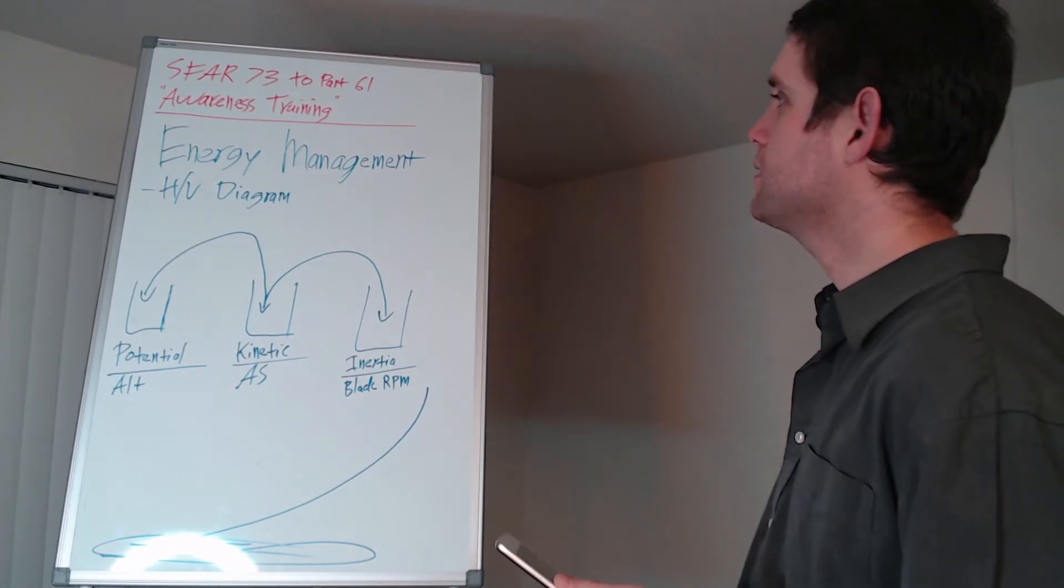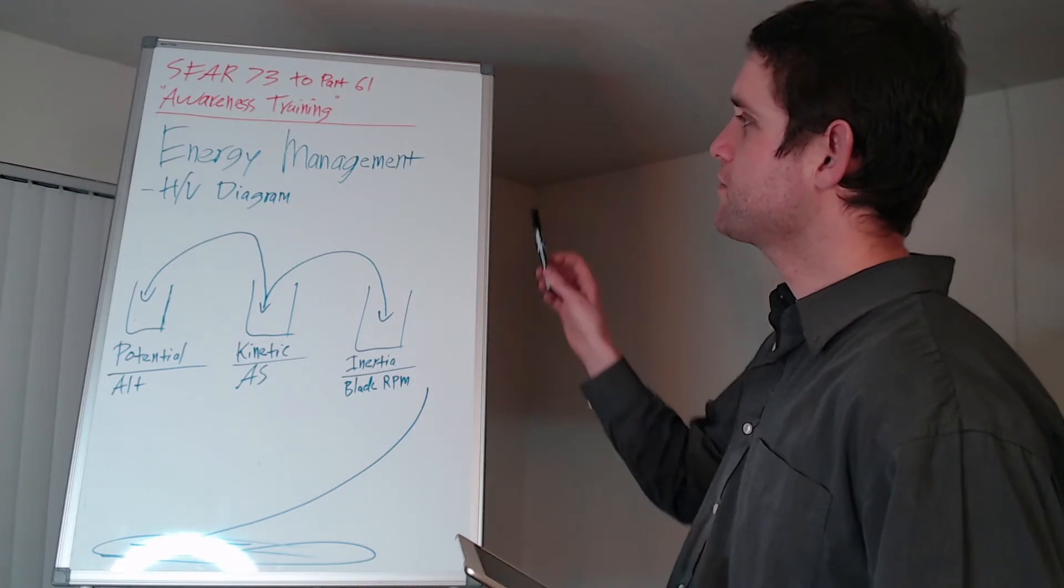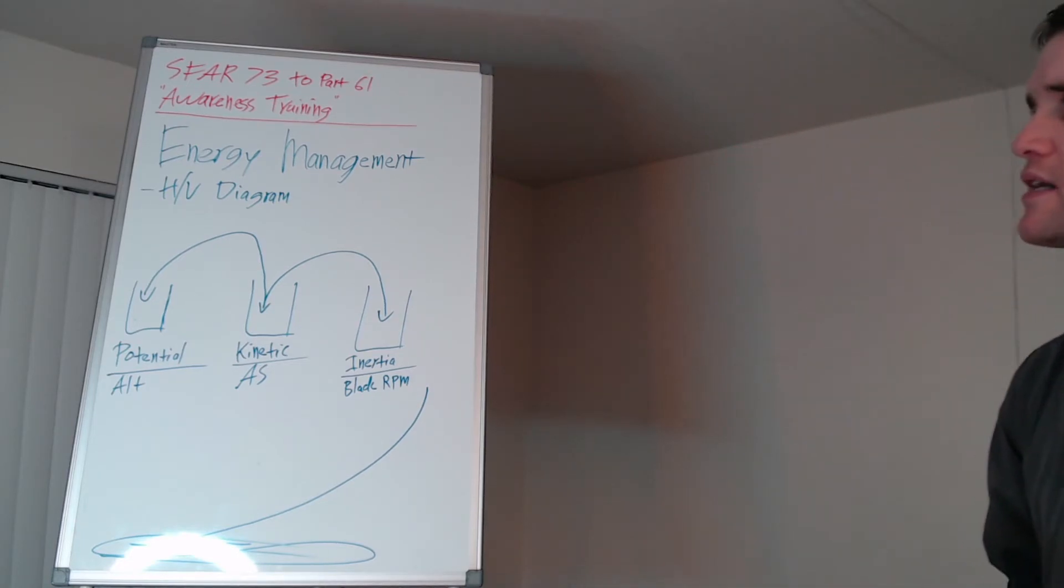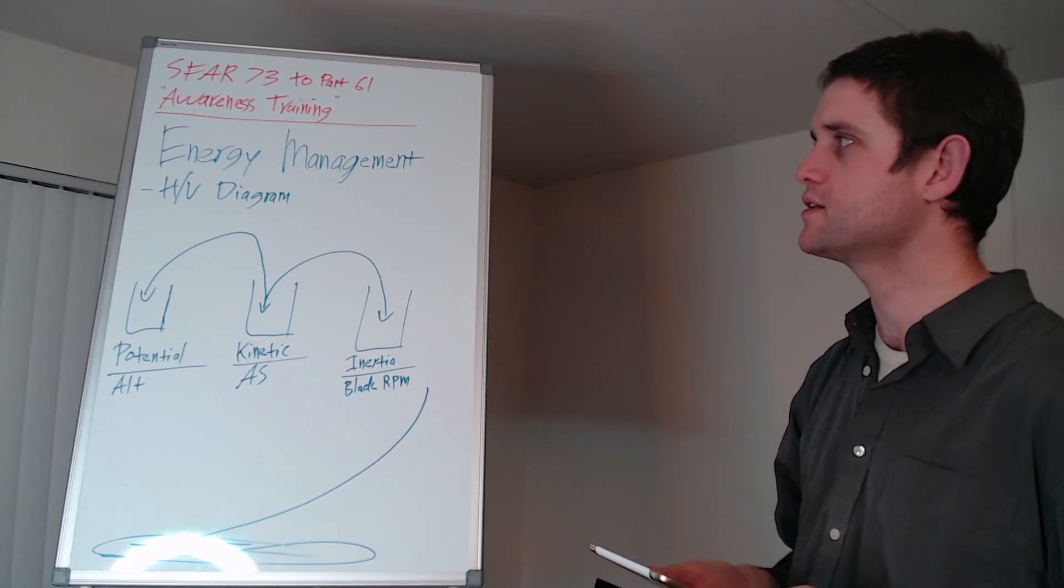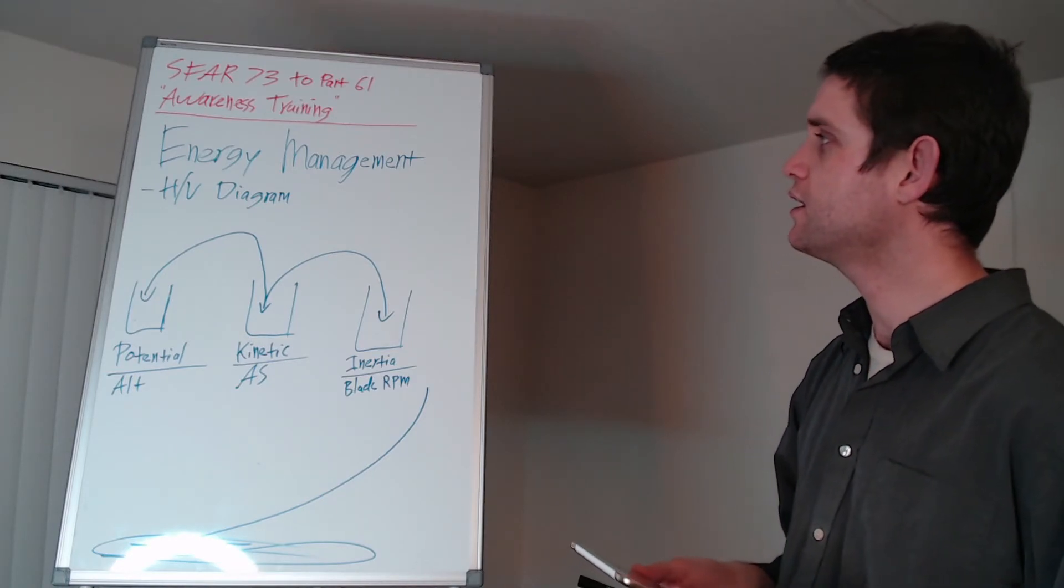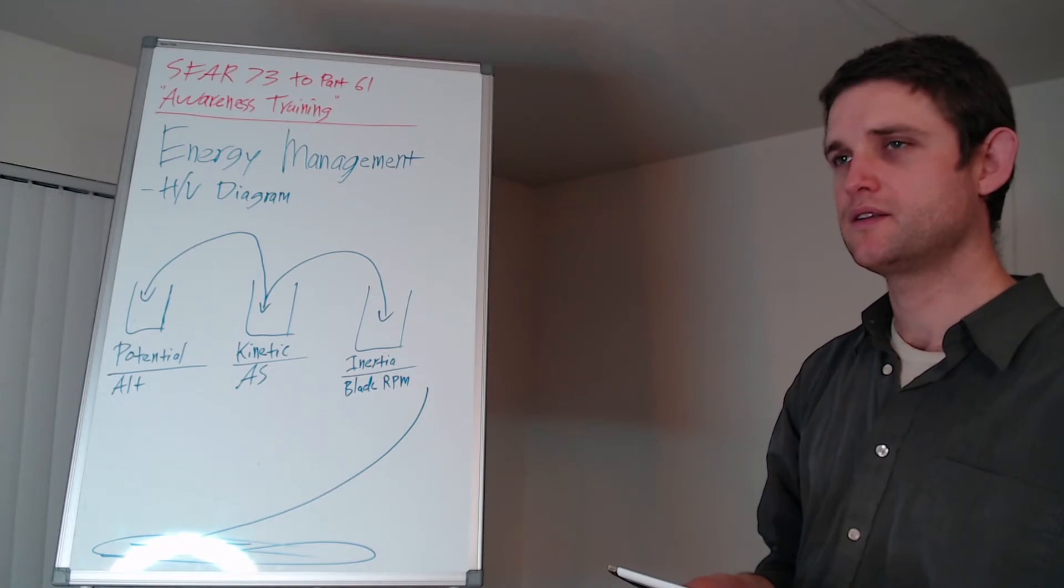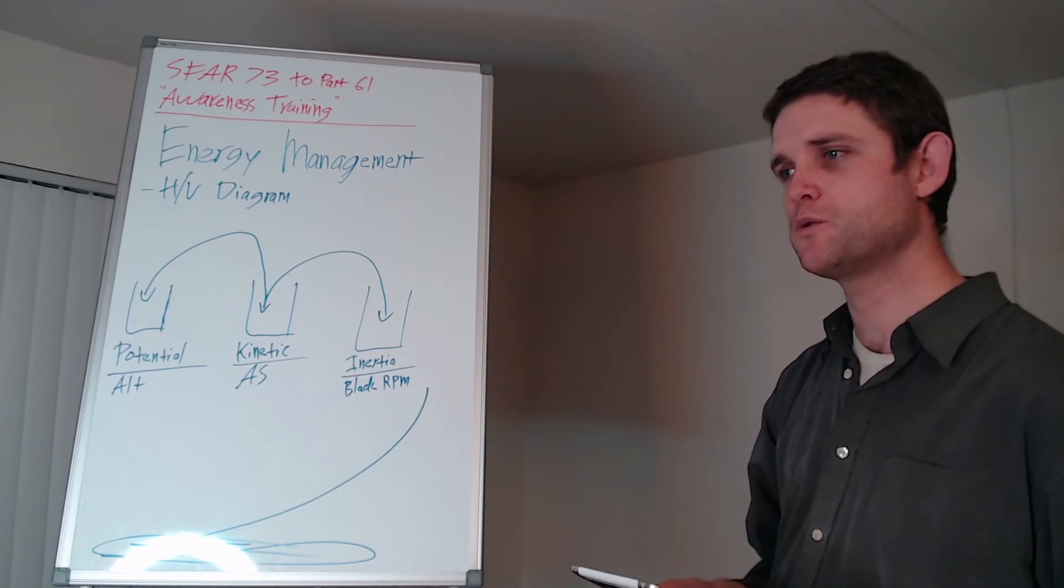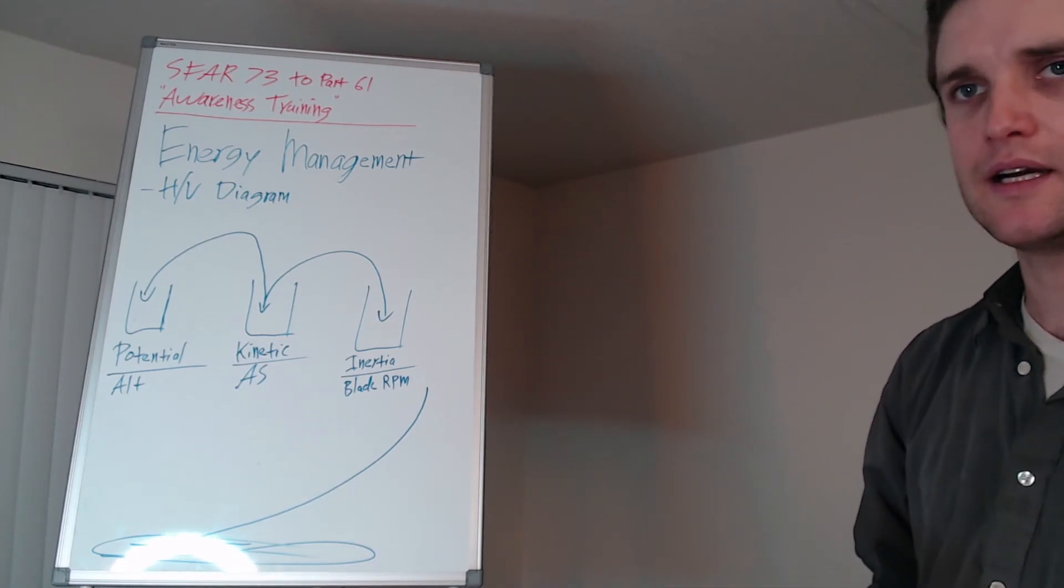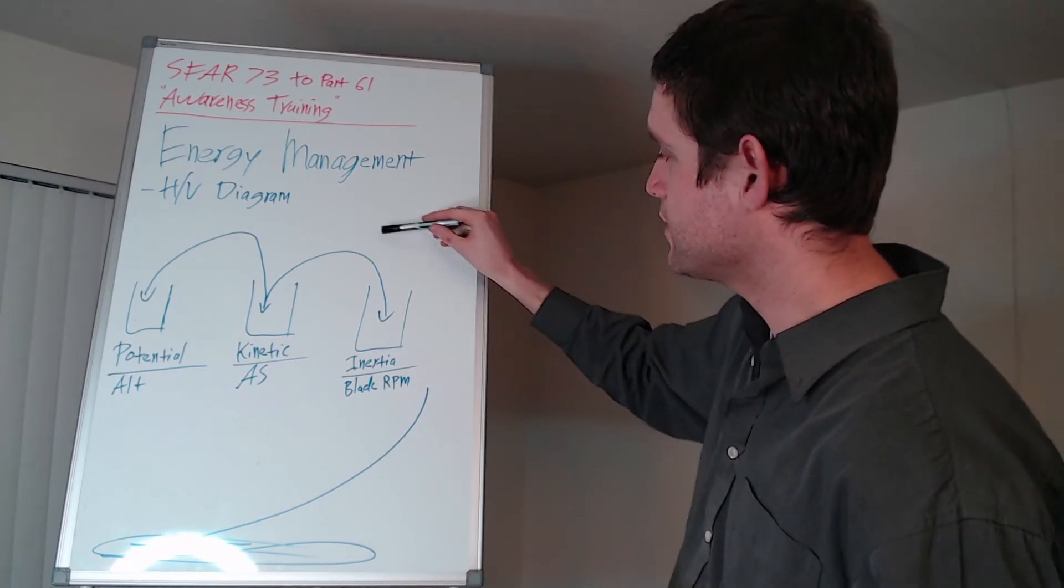Last thing, we're going to talk about energy management. For helicopters, we have a chart that actually tells us the safest combination of forward air speed as well as the safest combination of forward speed and altitude in the case of an engine failure or drive system failure. Generally, you don't want to be flying too slowly, too close to the ground, unless you're nearly touching the ground, i.e. in a hover.